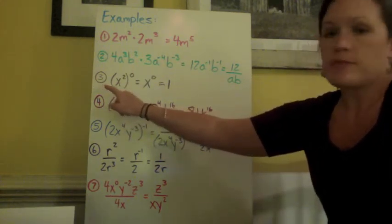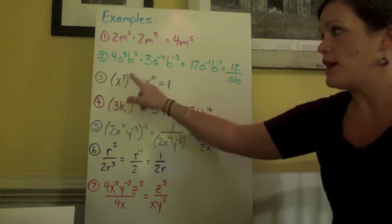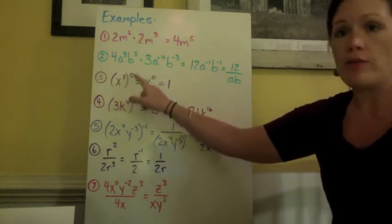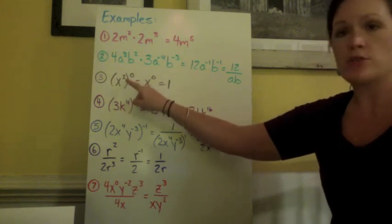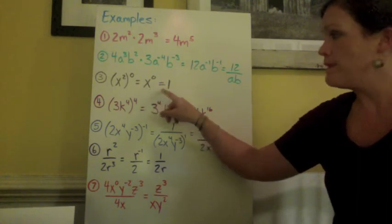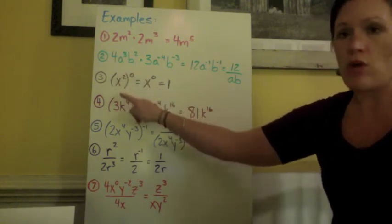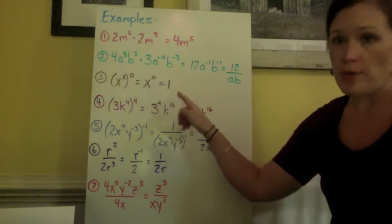Example 3. We have x squared to the 0 power. So 2 times 0. That's the power of a power. So we multiply 2 times 0 and we get x to the 0 power, and that's equal to 1. You could have skipped this step if you noticed this was all to the 0 power. It would automatically equal 1.